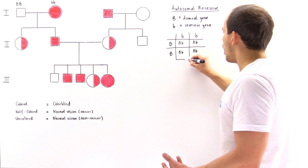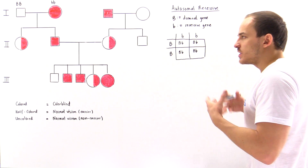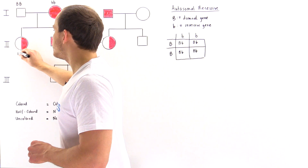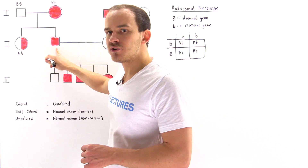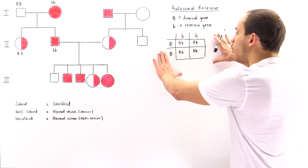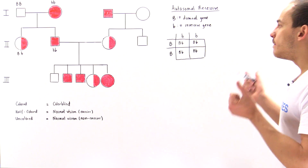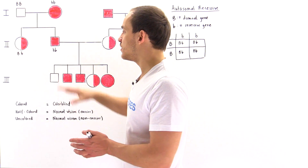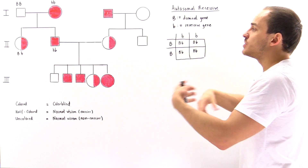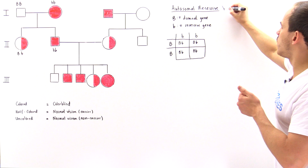Is that consistent with the pedigree? One offspring is Bb — half-colored — but the other, according to the pedigree, must be bb, which is fully colored. That is inconsistent, because the Punnett square tells us 100% of the offspring, whether male or female, must be heterozygous and therefore half-colored. Since one child is fully colored, the inheritance cannot be autosomal recessive.